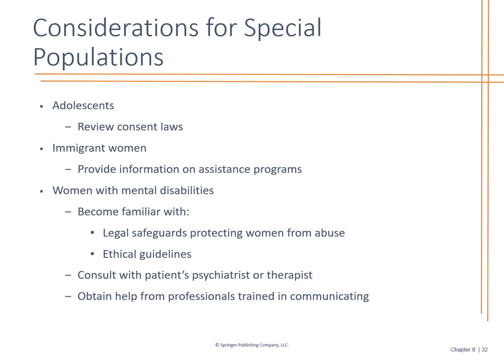Considerations for special populations include consent laws for adolescents — they don't need parental permission. Look at immigrant women who may not have a support system based on their ethnic background. Also look at women with mental disabilities, considering ethical guidelines, legal safeguards, and where to draw the line ethically — you may need to refer to psychiatry or therapy. A lot of times after the fact, patients have regret, guilt, and remorse, and we need to be there and be supportive for them.